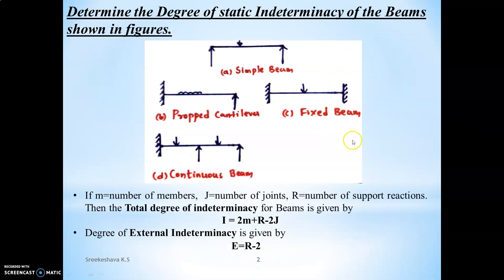If m is the number of members present in a structure, j is the number of joints, and r is the number of external support reactions provided at the ends, then the total degree of indeterminacy is given by: internal forces plus external reactions minus joint equilibrium conditions. External indeterminacy is given by e = r minus 2. Using these two empirical relations we are solving all these problems.